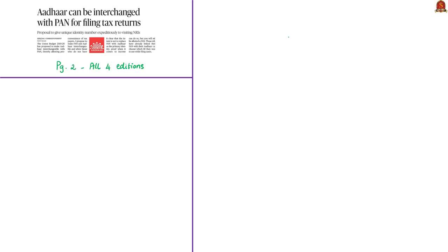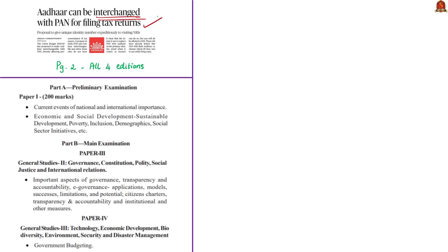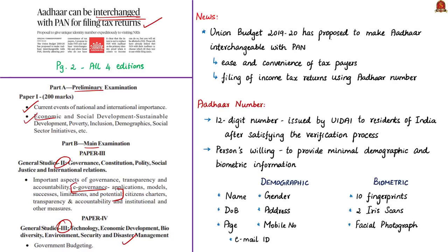Moving on to the next article discussion, which is about the announcement of interchangeability of Aadhaar with PAN in the Union budget. This discussion is important in the prelim syllabus under current events of national importance and economic development. It can also be linked to the main syllabus in GS Paper 2 under e-governance applications, models, successes, limitations, and potential, and to GS Paper 3 under government budgeting. The Union Budget 2019-20 has proposed to make Aadhaar interchangeable with PAN for the ease and convenience of taxpayers, allowing people without PAN to file income tax returns by simply quoting their Aadhaar number.